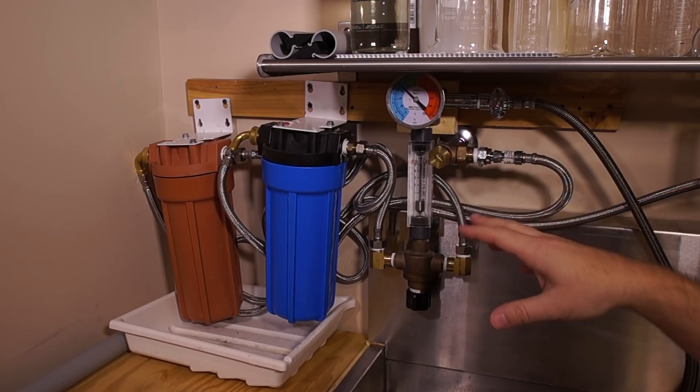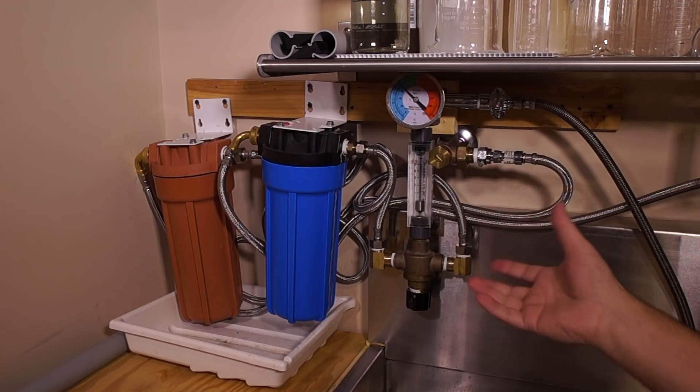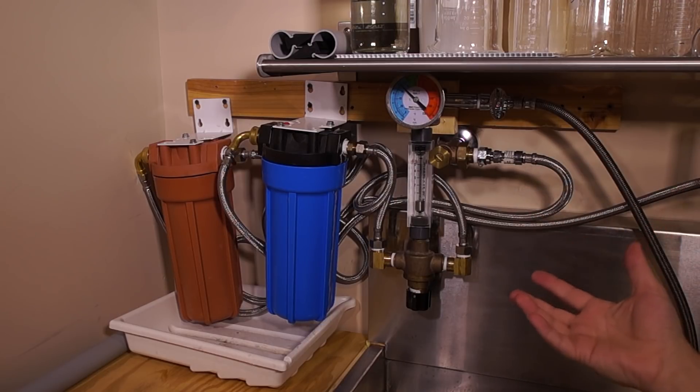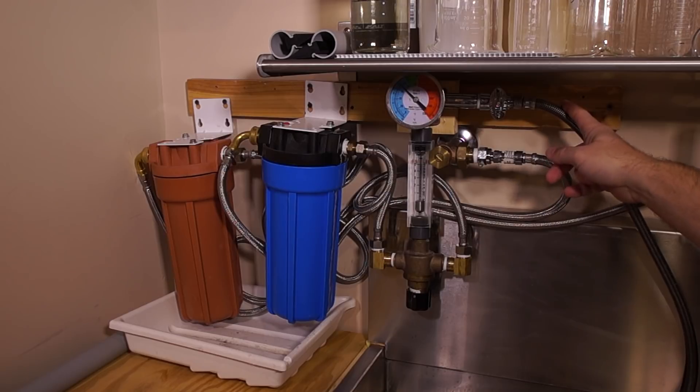So if I'm doing color negative film and I set it for 100 degrees Fahrenheit, then whether it's the summer and my incoming cold water is 70, 72 degrees Fahrenheit, or the winter like now and it's 40 degrees Fahrenheit, this valve will mix the cold and hot appropriately so it's always 100 coming out of the line.